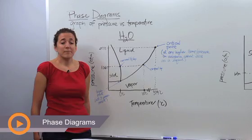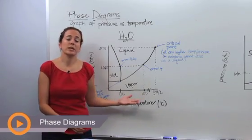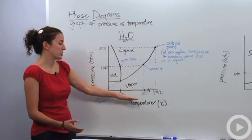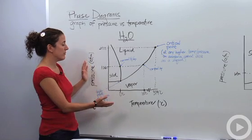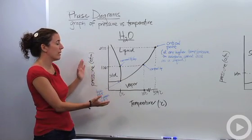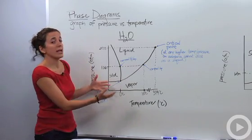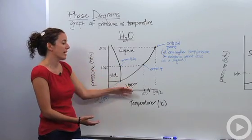Alright, so we're going to talk about phase diagrams. Phase diagrams are a graphical interpretation of pressure versus temperature. Basically, if you know the temperature or pressure of any substance, you can figure out what phase it is using the phase diagram.